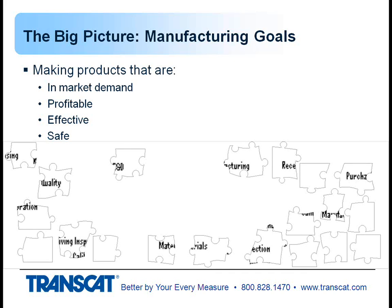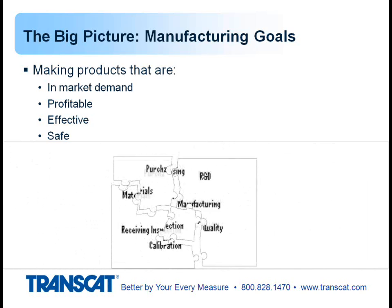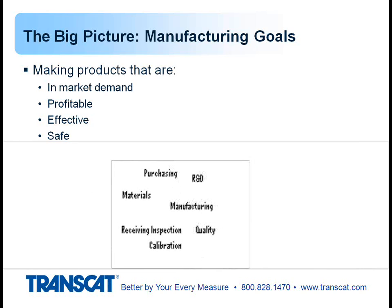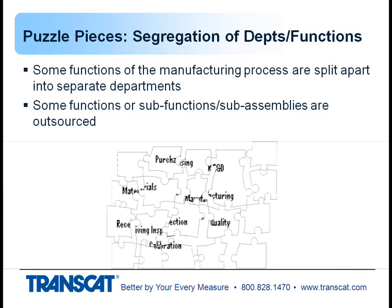The whole big picture can be split into parts, and if we put it all together we can see how it all fits. All of these functions and others are required to make this happen — to manufacture products of any type. Some functions of the manufacturing process are split into separate departments. Some sub-assemblies are either outsourced or handled by different departments internally, and that in itself causes miscommunication — not intentional, but it can cause things to get dropped or missed.